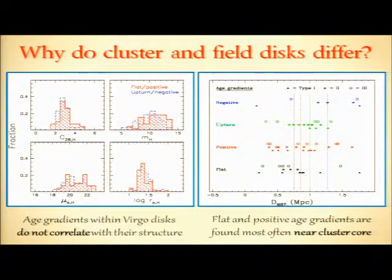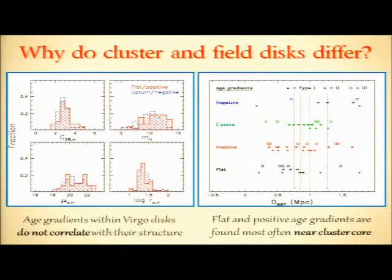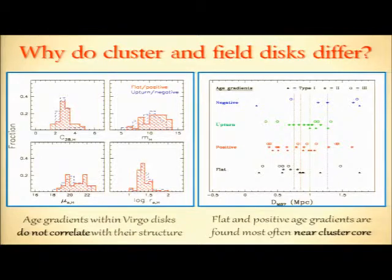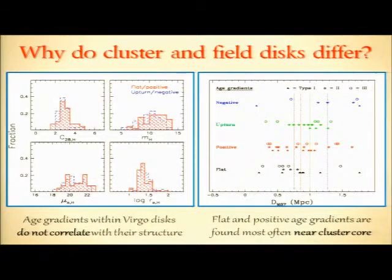This idea is given more weight by two additional plots. On the left are the distributions of structural parameters for galaxies in our sample showing flat or positive age gradients versus upturning or negative age gradients, while on the right are the cluster-centric radial distributions of these galaxies. We see that there are no distinct structural differences between the two families of age gradients in this cluster, but those galaxies hosting flat or positive age gradients seem to be preferentially found closer to the cluster core. If we interpret flat or positive age gradients as traits of galaxies whose star formation has been quenched within the cluster, this plot is consistent with our idea about the effects of ram pressure stripping and galaxy harassment, because these effects should be most strongly felt near the cluster core.